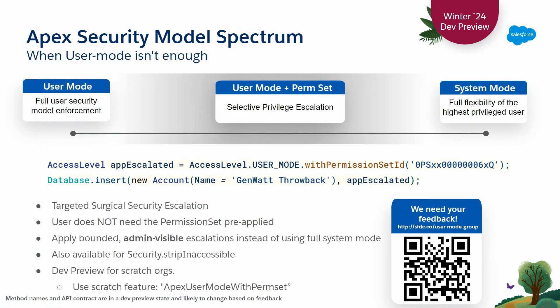We've heard feedback that user mode alone isn't good enough. There's something in the middle between user mode and system mode that developers would like us to support. We've been working on that idea and have come up with a developer preview - it's decidedly not the final form of this feature, as there are things to refine around how it works with packages and the security model, but we wanted to get tangible feedback.